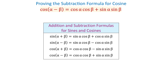Hello! In trigonometry, we have four basic trigonometric identities known as addition and subtraction formulas for sines and cosines. The first one is the sine of a sum of two angles, the next one is the sine of a difference of two angles, then cosine of a sum of two angles, and cosine of a difference of two angles.